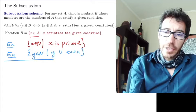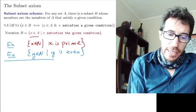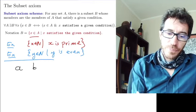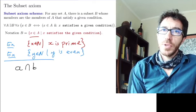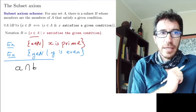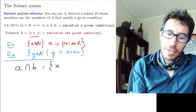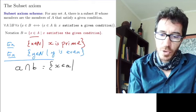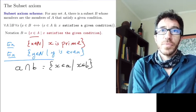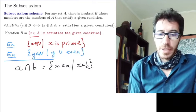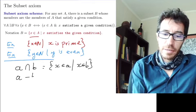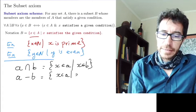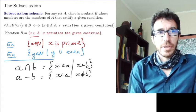Two useful examples: we can define intersection this way. Suppose we have two sets A and B and we want to find A intersection B. We can say this is the set of all x's that belong to A which satisfy the property that they also belong to B. The subset axiom tells us that this exists. We can also define A minus B — the set of all x's that belong to A but do not belong to B.